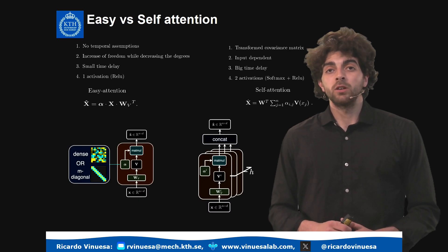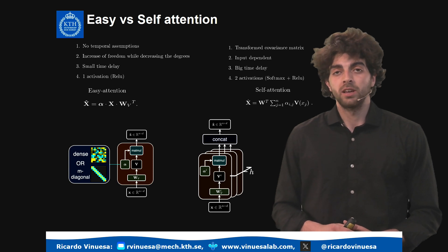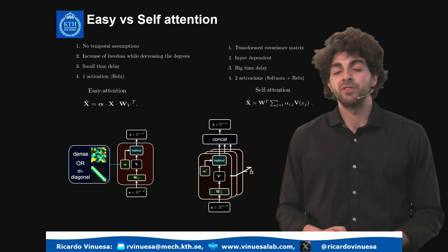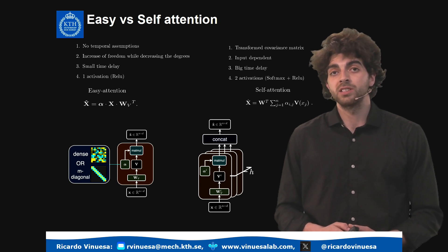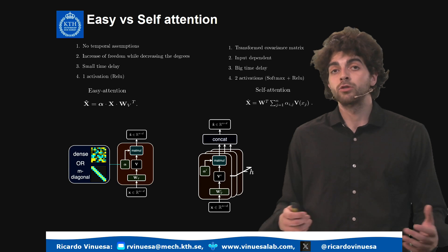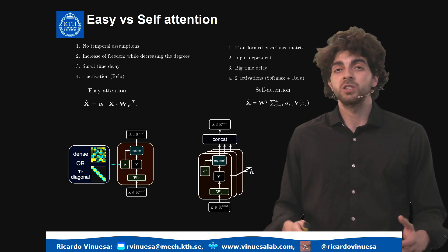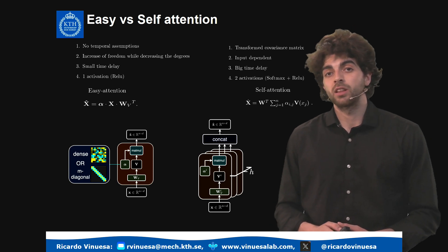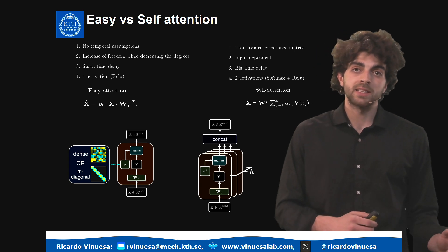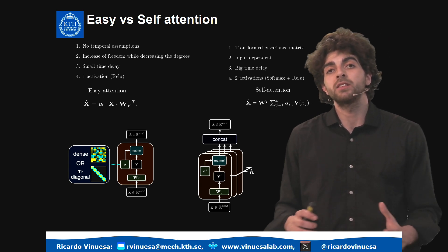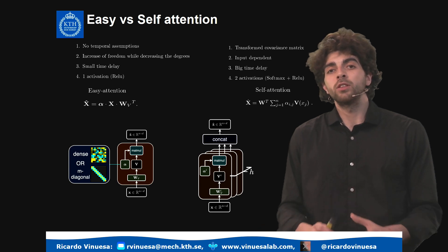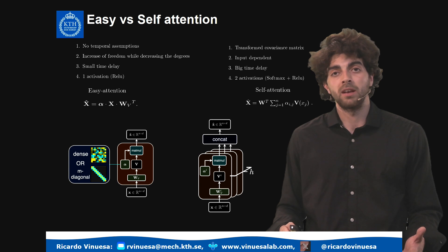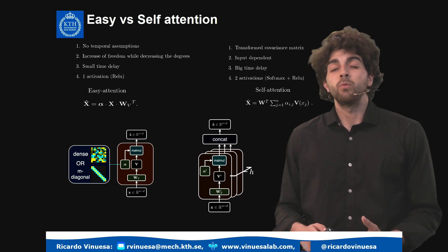Diving in to conclude this video, we will introduce the easy attention. This easy attention is a reinterpretation of the self-attention for physical systems, specifically for chaotic systems, which we will introduce in coming videos. The main differences between these two attention mechanisms are the following: the self-attention has two activation functions — softmax and ReLU — while the easy attention only has the ReLU, and this occurs because the attention matrix is free. We give complete freedom to the model to learn the attention matrix, meaning we do not impose any bias through metrics such as the inner product, and we do not impose the softmax.